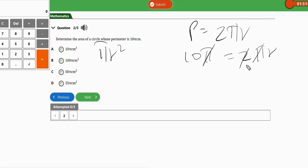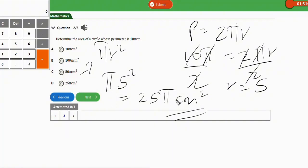Now when you plug in the value of r, we are going to have π times 5 squared. 5 squared is 25, so the correct option to this question is 25π cm². The correct option is option D. It's as simple as this.